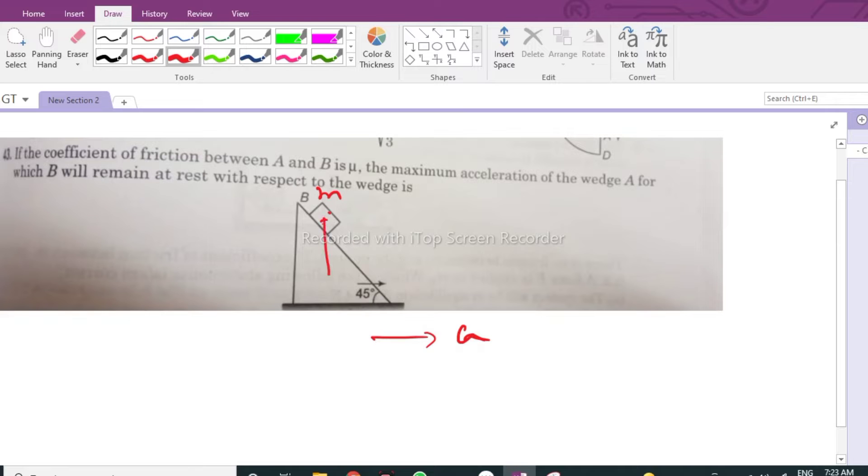Let us draw all the forces which are acting over here. The weight will be acting downward. This is mg sine theta component, and this is mg cosine theta component. If this angle is theta, then this is also theta.